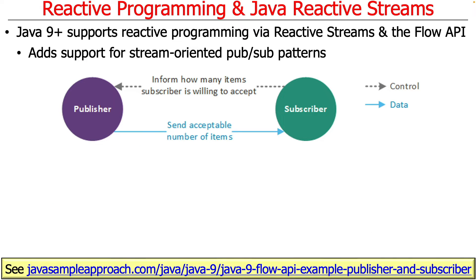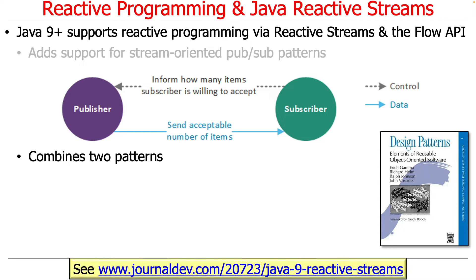What the Flow API does — and it's still there — is it adds support for stream-oriented publish-subscribe patterns. These stream-oriented pub-sub patterns apply to patterns you may be familiar with from the Gang of Four book, the Design Patterns: Elements of Reusable Object-Oriented Software book.